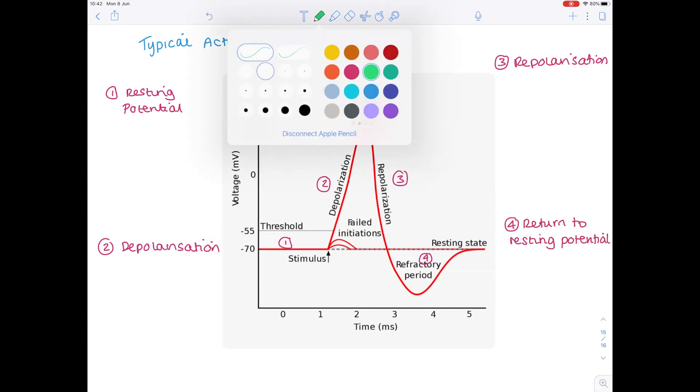In more detail now, before the action potential fires, the neuron should be at a state of rest, which remember is minus 70mV.